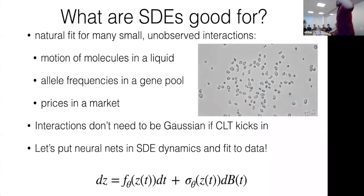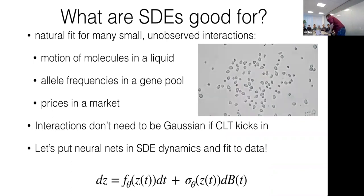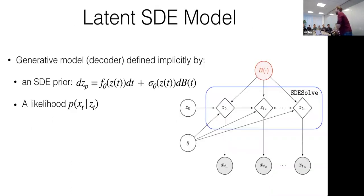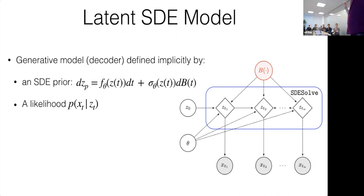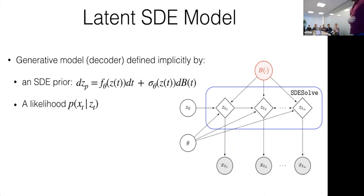Brownian motion was originally observed by watching pollen particles being hit by water molecules — that's what Brown was trying to figure out. Now we have the ultimate model: a continuous-time latent variable model where the latent state evolves as an SDE with a Brownian motion term. The graphical model notation doesn't fit GPs and SDEs very well — the entire Brownian motion function represents the noise instantaneously at every time step.